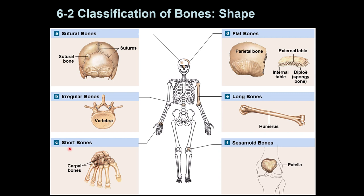The third type is called short bones — they are short and thick and small in size. These include the carpal bones in the wrist area, and also the tarsal bones (T-A-R-S-A-L) in the ankle area.